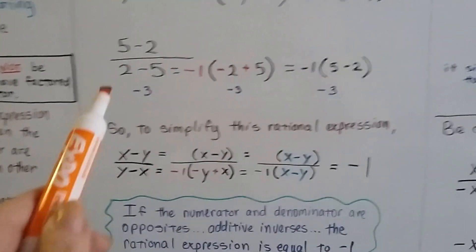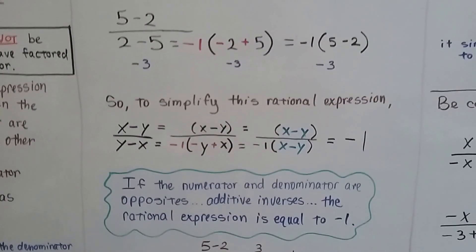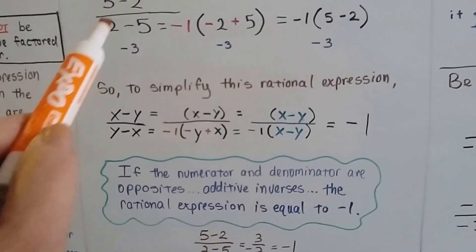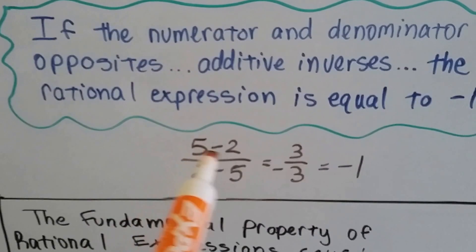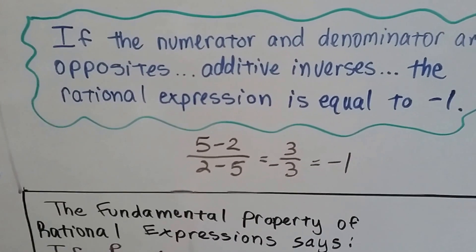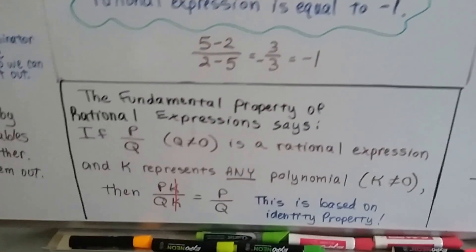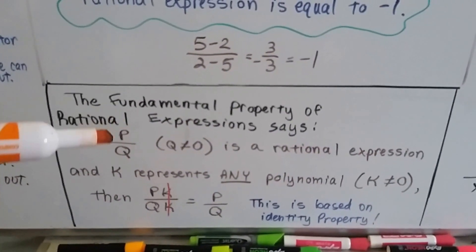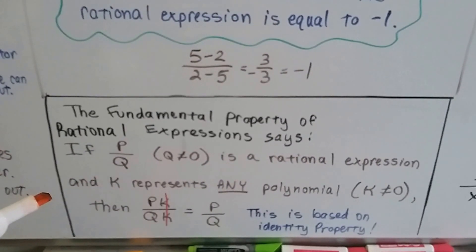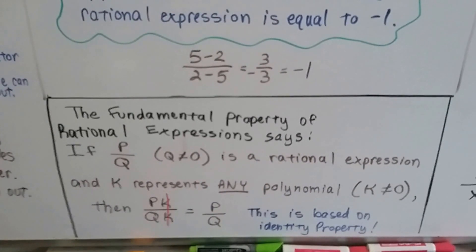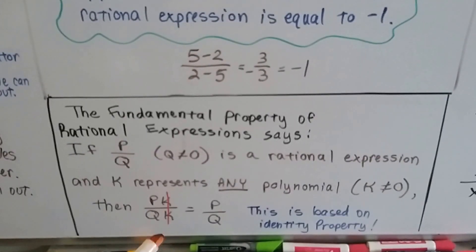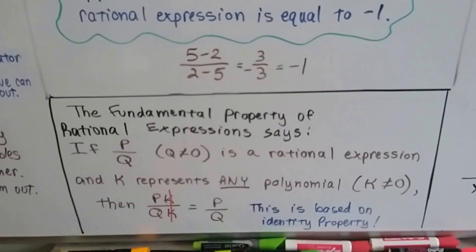You're going to want to write this down: if the numerator and denominator are opposites — additive inverses — the rational expression is going to be equal to negative 1. For example, 5 minus 2 over 2 minus 5 is positive 3 over negative 3, which gives us negative 1. The fundamental property of rational expressions says: if we've got p over q, and q is not equal to 0, and k represents any polynomial (trinomial, binomial, anything) that's also not 0, then p times k over q times k — we can cancel them out and end up back with p over q. That's the identity property.